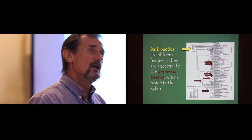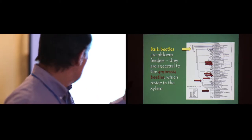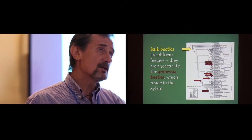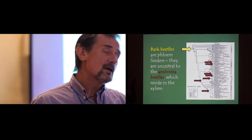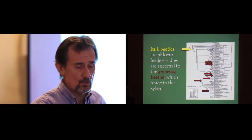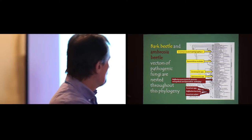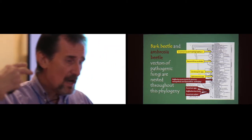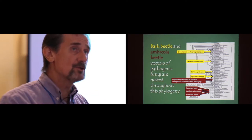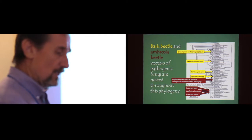But the key thing here is that bark beetles are ancestral. They usually arose on gymnosperms, on conifers. And the change that's taken place is that the ambrosia beetles, rather than colonizing the phloem, colonized the xylem. And that shift usually has been associated also with going to angiosperms. If we superimpose upon this pathogenic symbionts, not just the symbionts, but the symbionts that have been shown to be pathogens on trees, you can see it's spread throughout this relationship here.